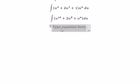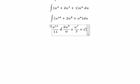Then you got about u¹¹/11 + 2u⁹/9 + u⁷/7 and we have C as the constant.